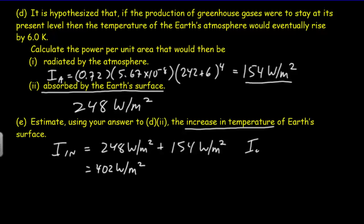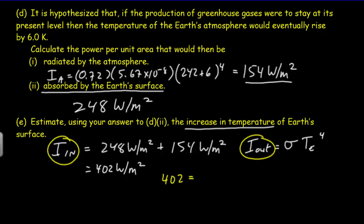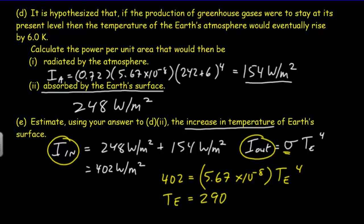Now let's look at the output intensity. We treat the Earth as a perfect black body radiator — emissivity equals one — so the output is just σT⁴. Equating the input intensity of 402 to σT⁴ and solving gives a new temperature of 290 Kelvin. Therefore delta T equals 290 minus the original Earth surface temperature of 288, for an increase of 2 Kelvin.